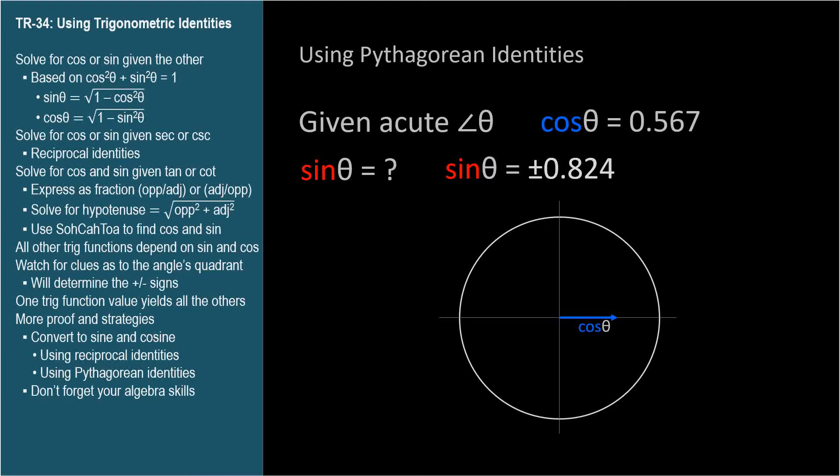And it makes sense, too. There are two angles on our unit circle that have a cosine of 0.567. But we're told that theta is acute, so we'll choose the positive value of 0.824 since theta must be in the first quadrant.